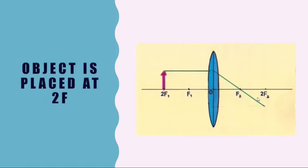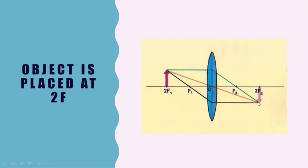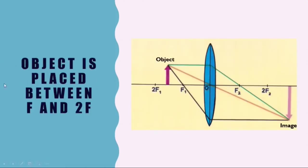Number three: when the object is placed at 2f. Each ray will be analyzed differently. The first ray, parallel to the principal axis, passes through the principal focus after passing through the lens. The second ray remains undeviated. The third ray, which passes through the principal focus, after passing through the lens becomes parallel to the principal axis. These three rays meet at a point where we get an inverted and real image on the opposite side of the lens, and the size of the image will be the same as the object. This is the case when we make photocopies of the same size.